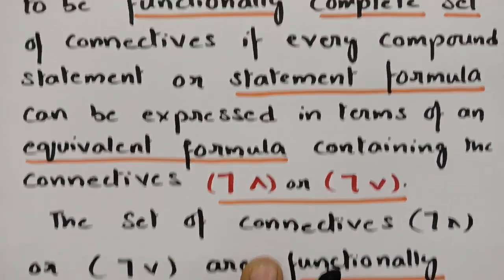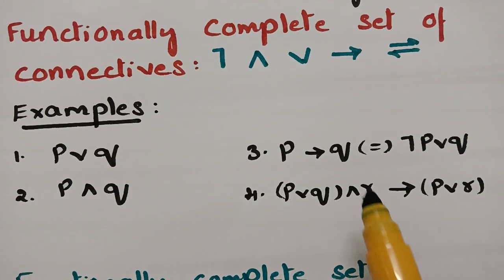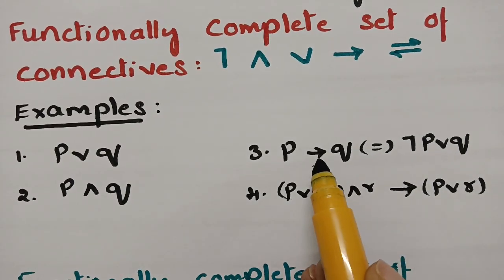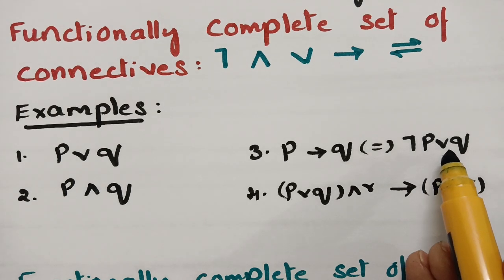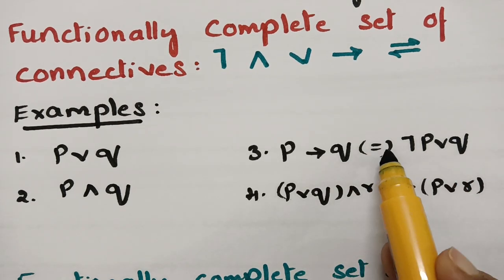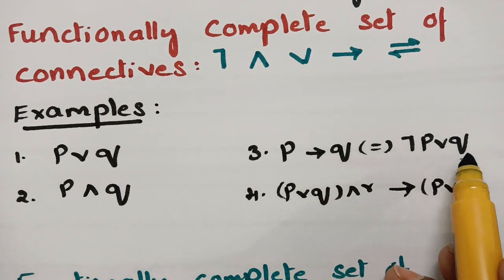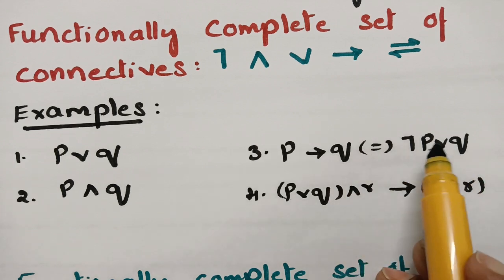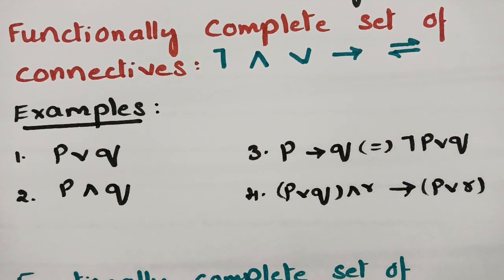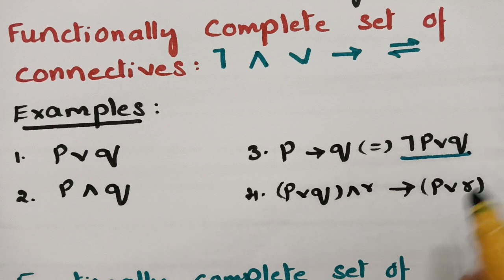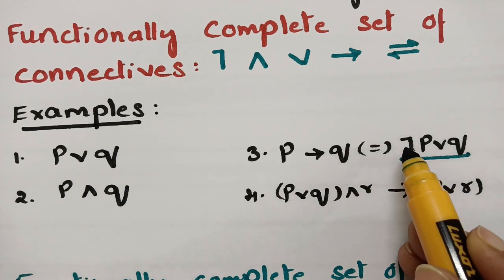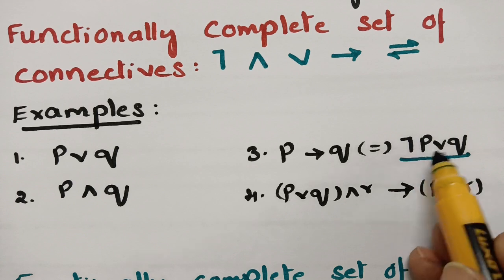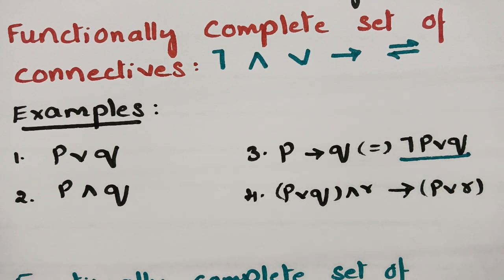So in a question if we have many connectives — implication, biconditional, disjunction — as they are equivalent formulas, at last in the final form, if we have negation and disjunction or negation and conjunction, then those set of connectives are called the functionally complete set of connectives.